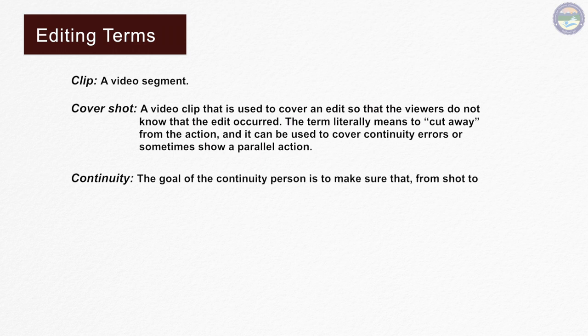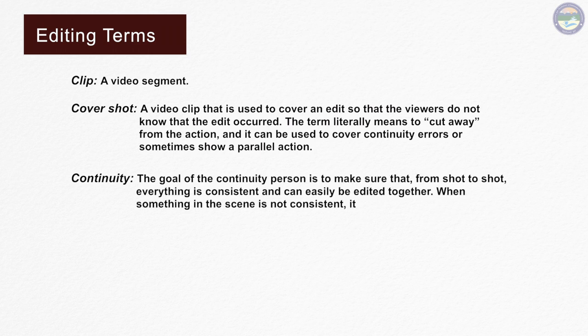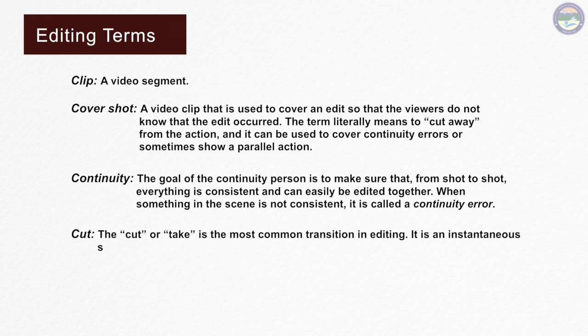Next is continuity. The goal of the continuity person is to make sure that from shot to shot, everything is consistent and can easily be edited together. When something in the scene is not consistent, it is called a continuity error. The cut or take is the most common transition in editing. It is an instantaneous switch from one shot to the next.